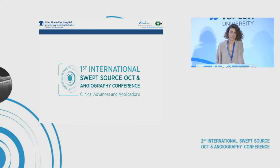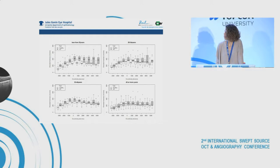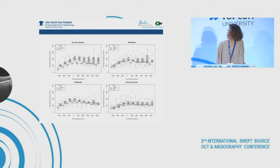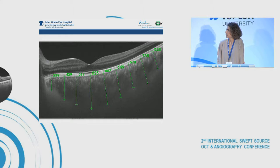Last year, during the first edition of this meeting, I had the opportunity to present the results of our first study talking about choroidal thickness in keratoconus patients. We found that the choroid of keratoconus patients was thicker, and this thickening was decreasing with age. Here you have an example.